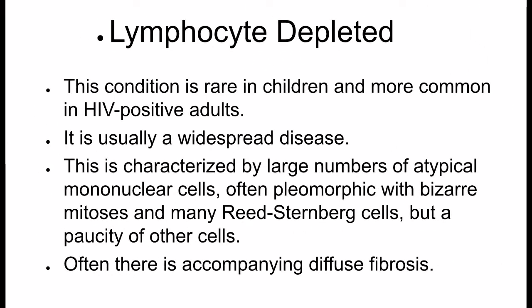Lymphocyte depleted: This condition is rare in children and more common in HIV-positive adults. It is usually a widespread disease. This subtype is characterized by large numbers of atypical mononuclear cells, often pleomorphic with bizarre mitoses, and many Reed-Sternberg cells but a paucity of other cells. Often there is accompanying diffuse fibrosis.